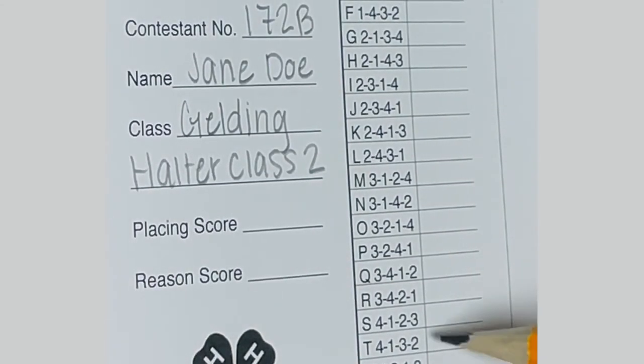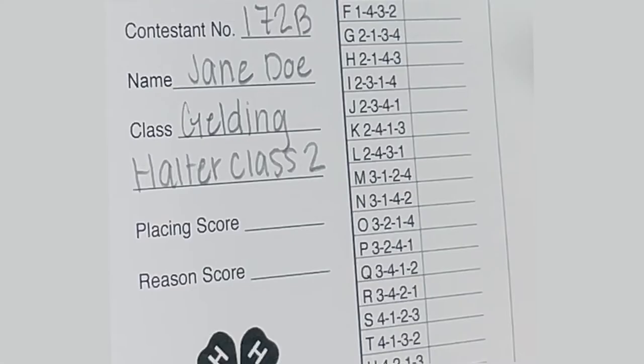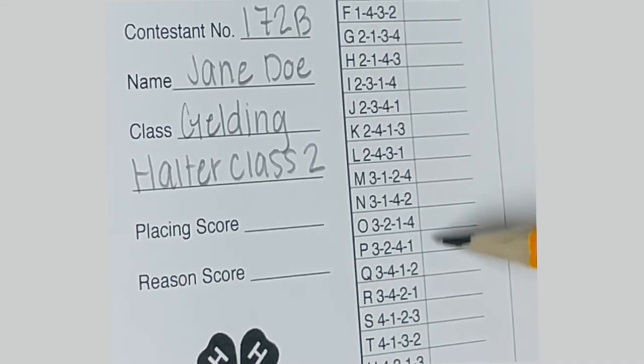The next step is finding the correct placing order on the card. Let's say I place the class 3412. I will go over to the list of numbers, go down the list until I find 3412.